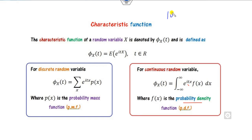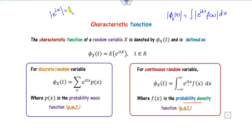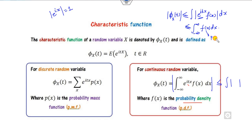The characteristic function exists for all values of t. To see why, we take the absolute value. Since |e^(iota·t·x)| = 1 always, the modulus of the characteristic function is bounded by the integral of |f(x)| dx from minus infinity to plus infinity, which equals 1 because f is a PDF. So the absolute value is always less than or equal to 1, meaning it is bounded and exists for all values of t.